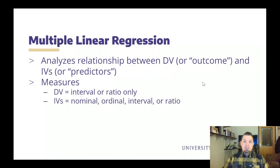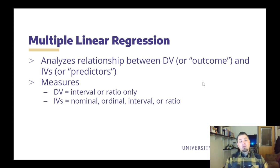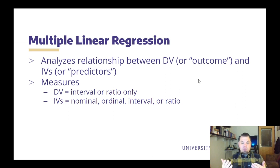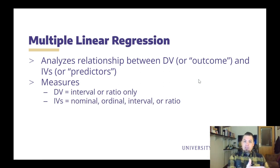Regression is a statistical method that analyzes the relationship between a dependent variable, also known as an outcome variable, and one or more independent variables, which we also call predictor variables. We often refer to independent variables as predictors and dependent variables as outcomes, because regression is a predictive analysis. That means we can predict a certain score on an outcome or on the DV based on the score of a predictor.